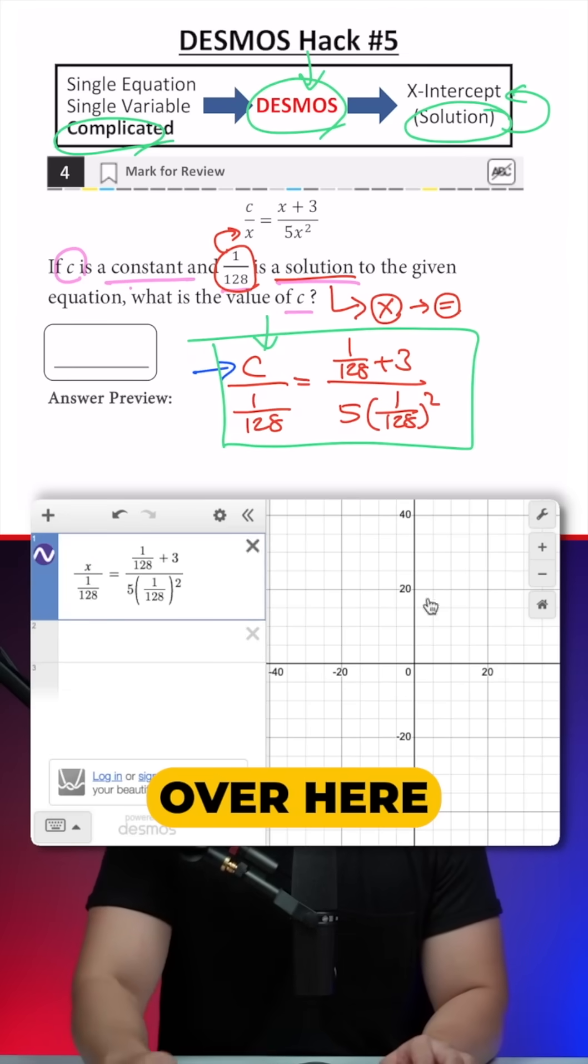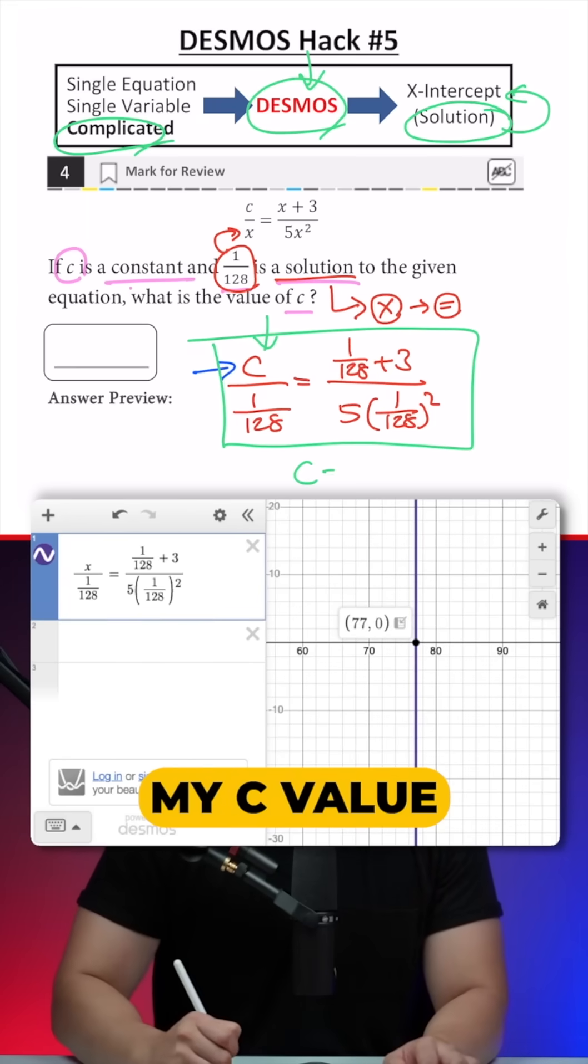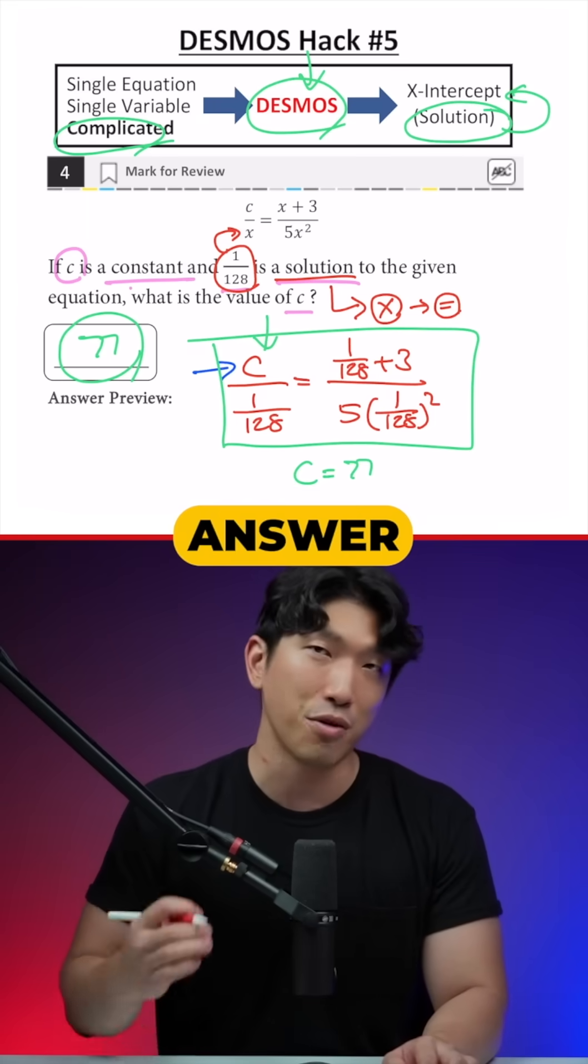So I'm just going to plug in X over here and I'm going to see that my x-intercept is located at 77, which means my C value is going to be 77. That's going to be my final answer.